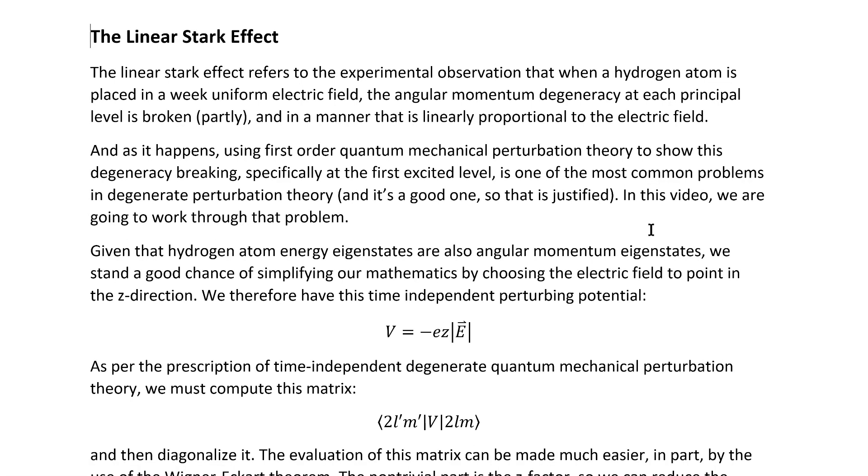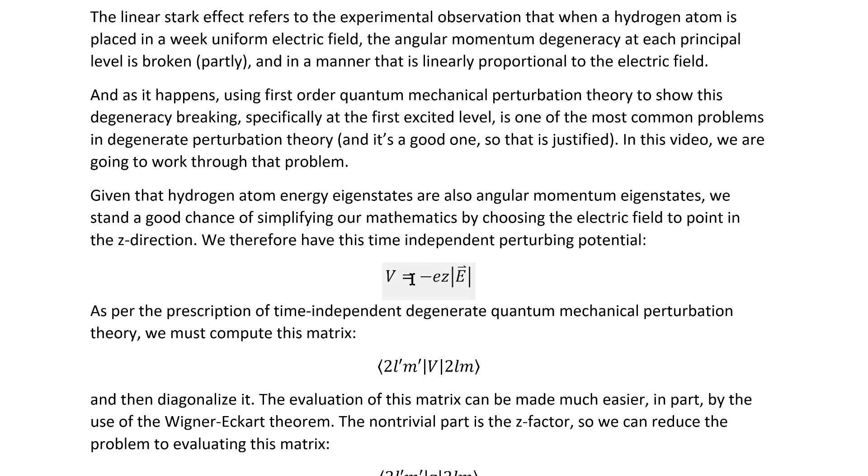Given that the hydrogen atom energy eigenstates are also angular momentum eigenstates, as with so many other problems in quantum mechanics, we stand a good chance of simplifying our mathematics by choosing the electric field to point in the z-direction. We therefore have this perturbing potential.